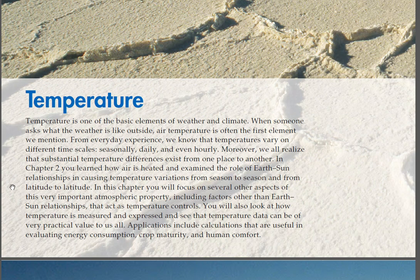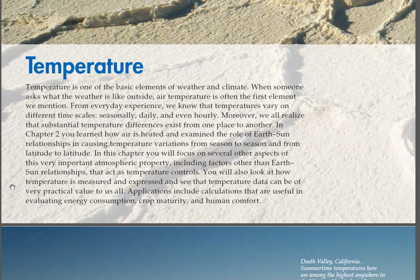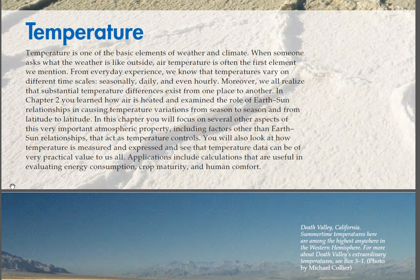In this chapter you will focus on several other aspects of this very important atmospheric property, including factors other than Earth-Sun relationships that act as temperature controls. You will also look at how temperature is measured and expressed, and see that temperature data can be of very practical value. Applications include calculations useful in evaluating energy consumption, crop maturity, and human comfort.